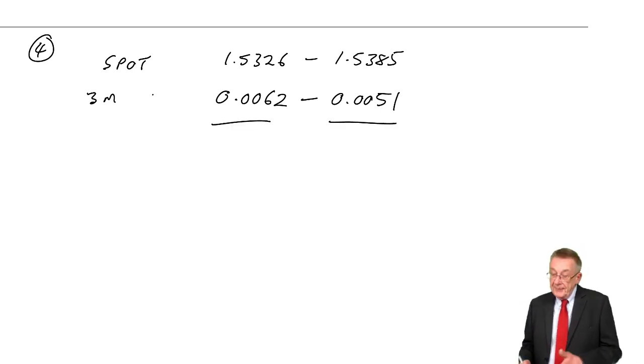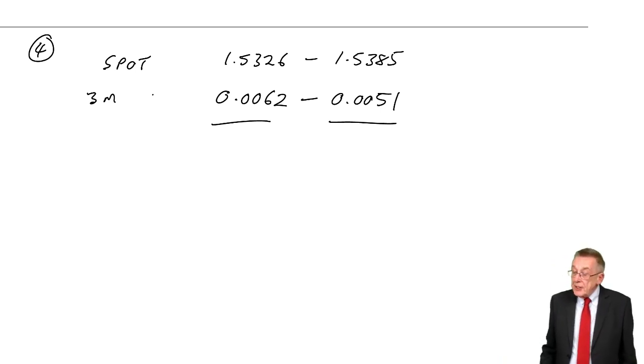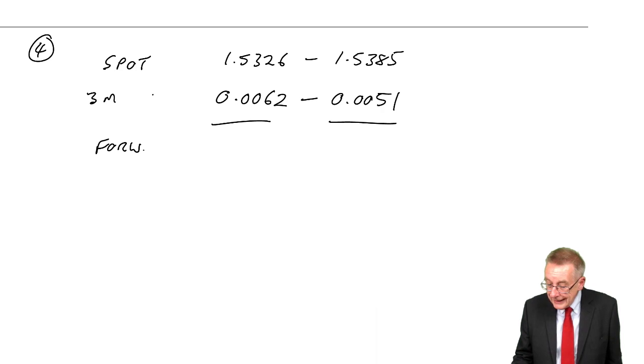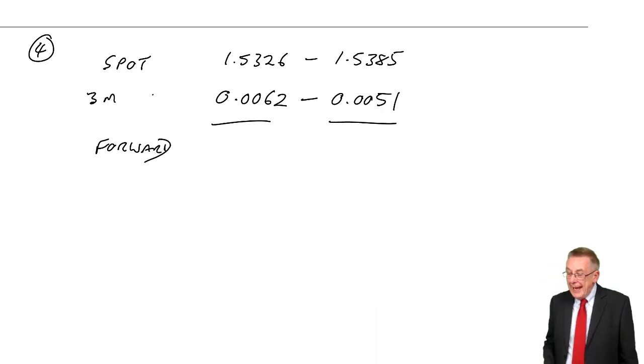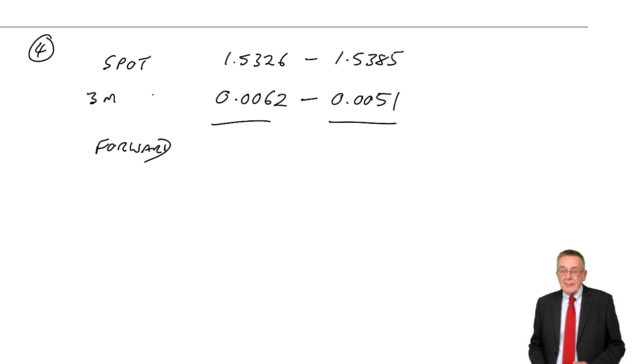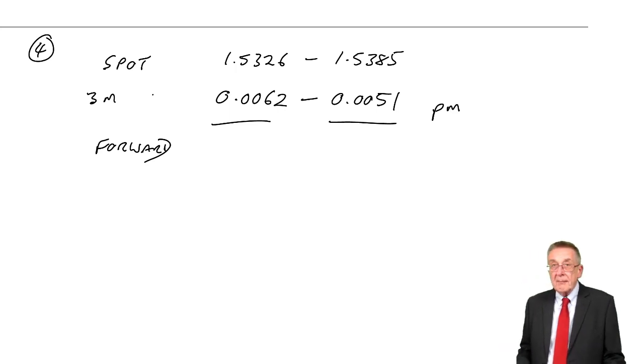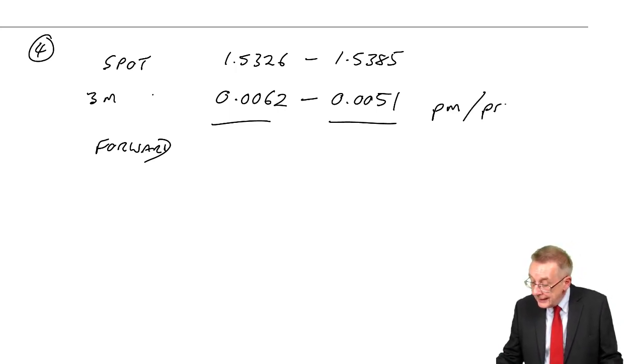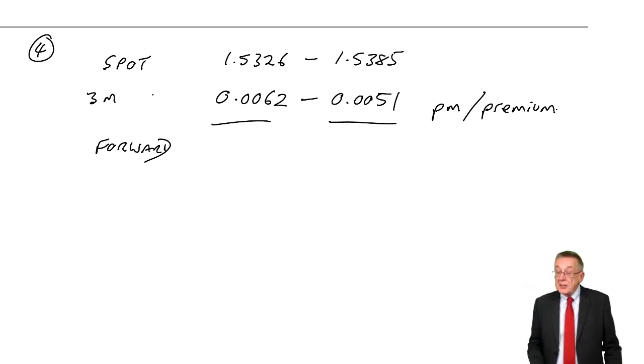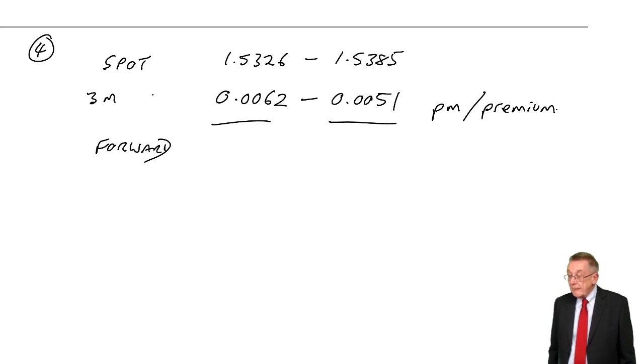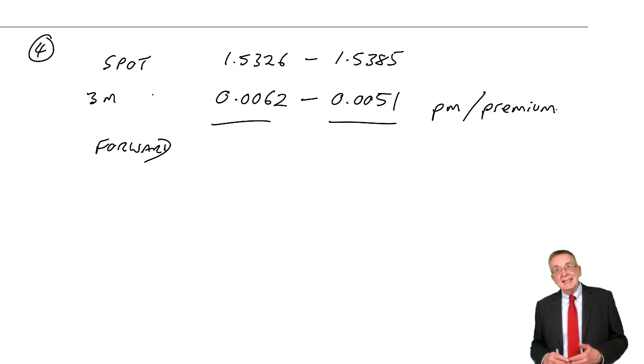The second is, the forward rate, that's the difference from spot. So the question is, to get the forward rate, are we going to add 62 or subtract it? That's what the words at the end mean. It says PUM, which stands for premium. Premium makes it sound as though you add it. But in fact, if it's quoted at a premium, to get the forward rate, we subtract it from spot.